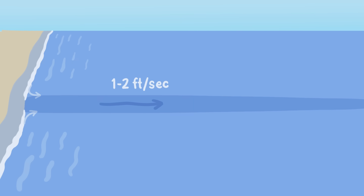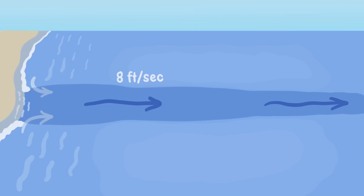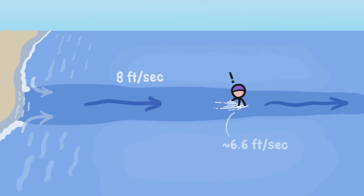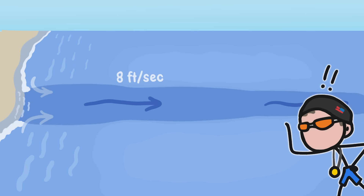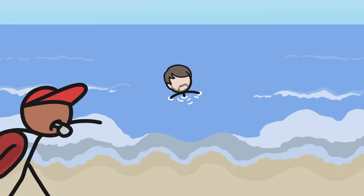Rip currents typically move 1-2 feet per second, with the fastest topping 8 feet per second, and most of them can easily overpower even the best swimmers and carry them away from shore. So even if you're Michael Phelps, don't even think about trying to swim against a rip current. There are, however, two potential escape routes that beach safety experts recommend if you're ever caught in one.